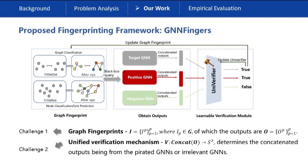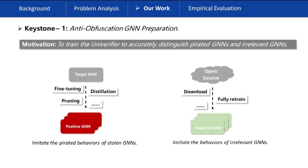To fill the critical gap, in this paper we propose a graph fingerprinting framework named GNN-Effingers. The first keystone of GNN-Effingers is the anti-obfuscation GNN preparation, which aims to train the verifier to accurately distinguish pirated GNNs and irrelevant GNNs. Therefore, we utilize model obfuscation techniques to prepare positive GNNs to imitate the pirated behaviors. Moreover, we also prepare negative GNNs by downloading GNNs from open source. All positive and negative GNNs will be finally used to train the verifier and graph fingerprints.